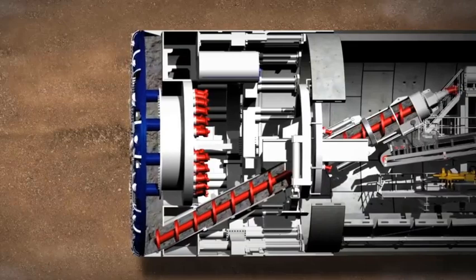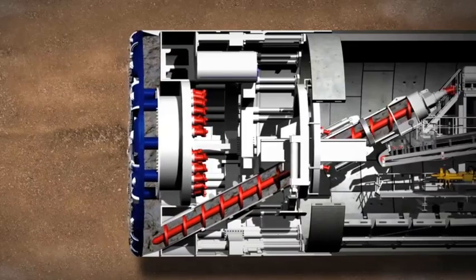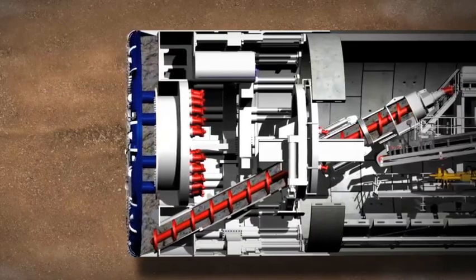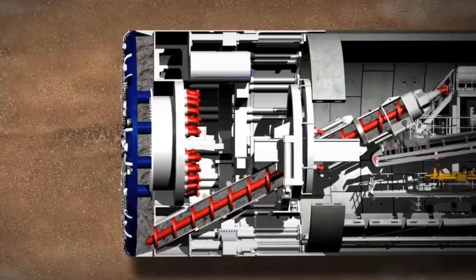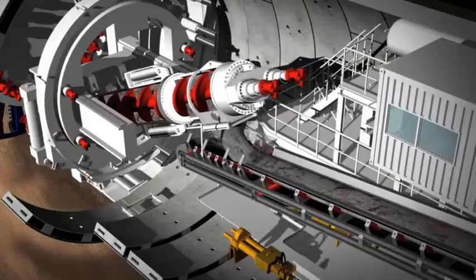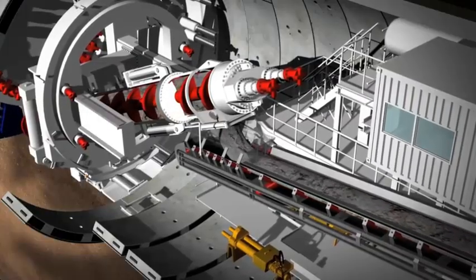The tunnel face is continuously monitored by pressure sensors. They check the turning power of the cutting wheel and the screw conveyor, and they also keep track of the material that's been excavated. The material is then taken away on conveyor belts.